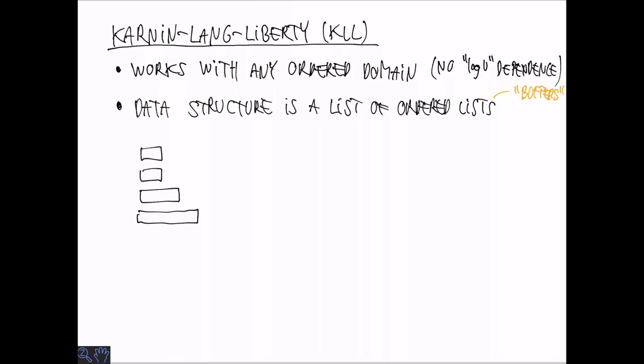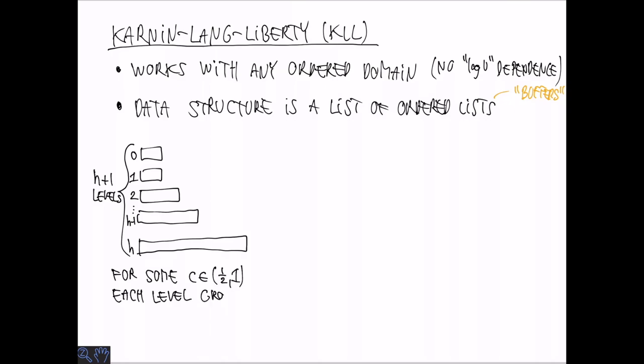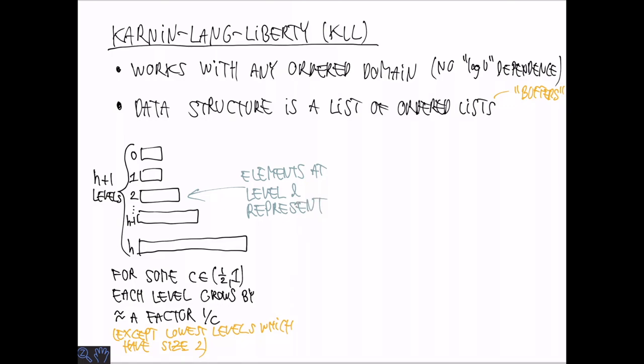So the sizes of these lists are geometrically growing, and we have a total number of h plus 1 levels numbered from 0 to h. And each level is a factor of 1 over c bigger than the previous one, where c is a parameter between 1 half and 1. And this is, of course, approximate because the actual sizes are integers, but we'll assume that they grow by a factor of exactly 1 over c, except the lowest levels. So we might go down to size 2, and we won't go any further down.